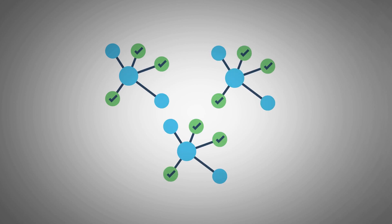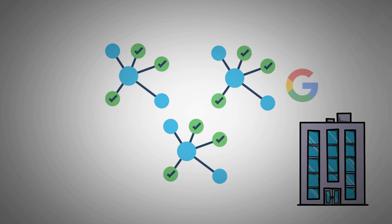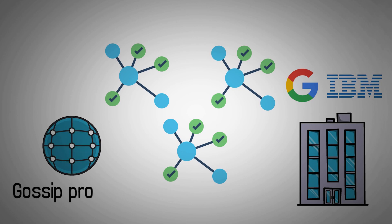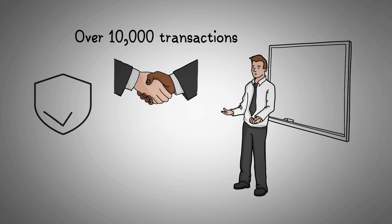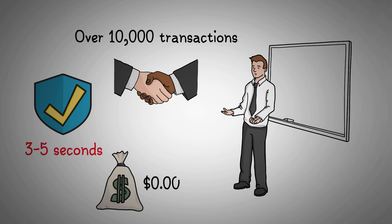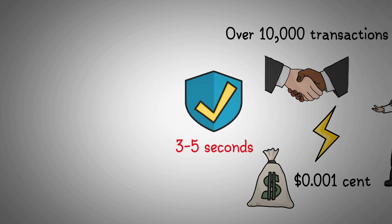The Hedera distributed ledger runs on a group of nodes operated by large companies like Google and IBM, and it uses an algorithm called the gossip protocol to ensure that transactions are carried out fast and at a low cost. According to Hedera developers, the network can handle over 10,000 transactions per second with a settlement and confirmation time of three to five seconds only. The average cost of a transaction is 0.001 cents, which is relatively cheap, and these transactions only require a fraction of the energy consumed by best-known blockchains.